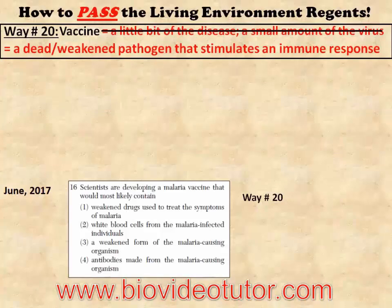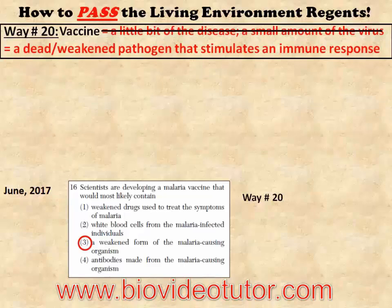Make sure to specify the words 'dead or weakened pathogen' in your answer when describing what a vaccine is. So when you see the word vaccine, look for a weakened form of the disease or the pathogen — a dead or weakened pathogen. In this case, it's choice three. That was a multiple choice question for one point.